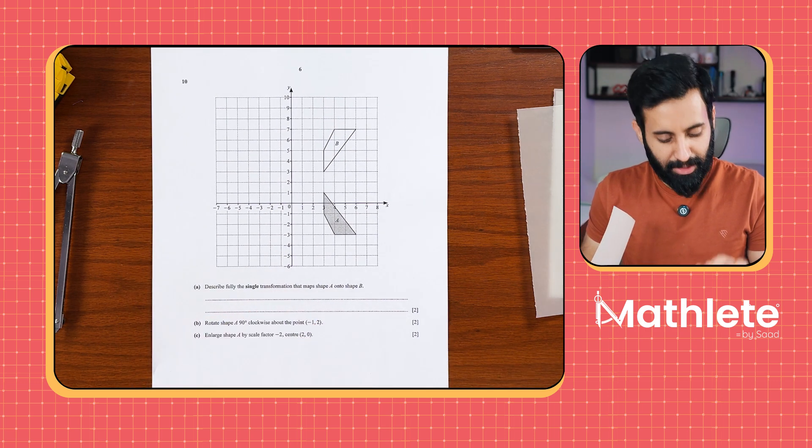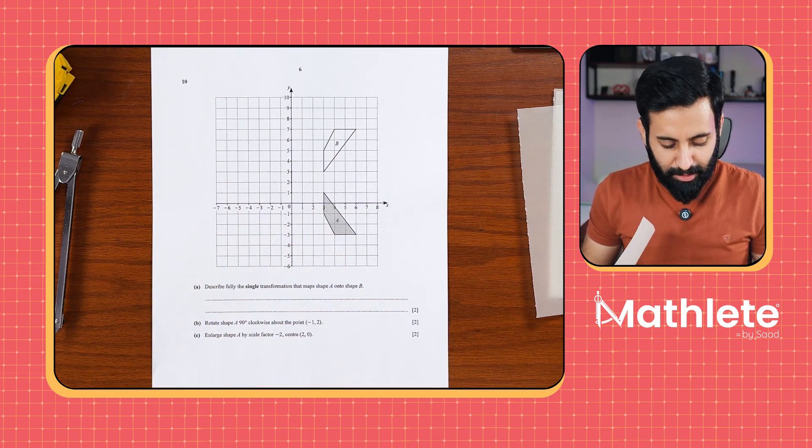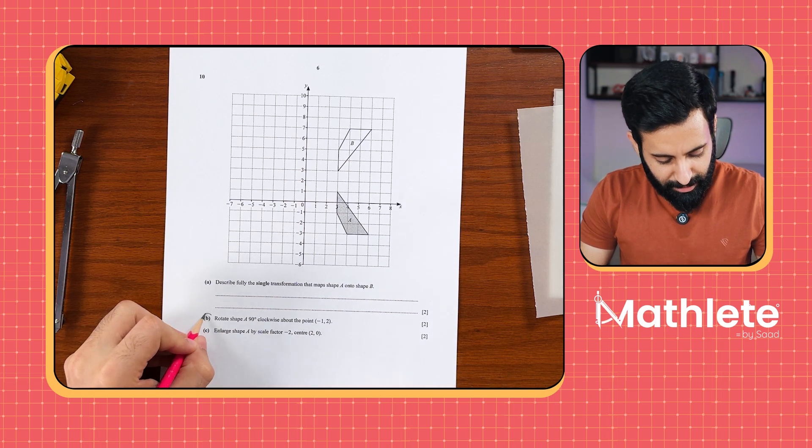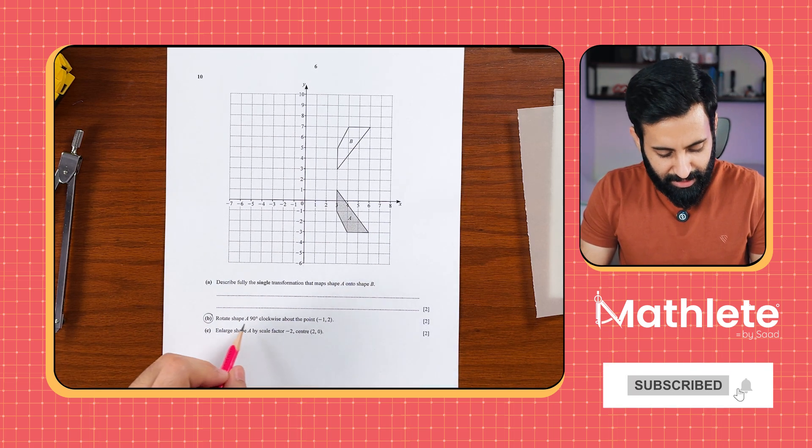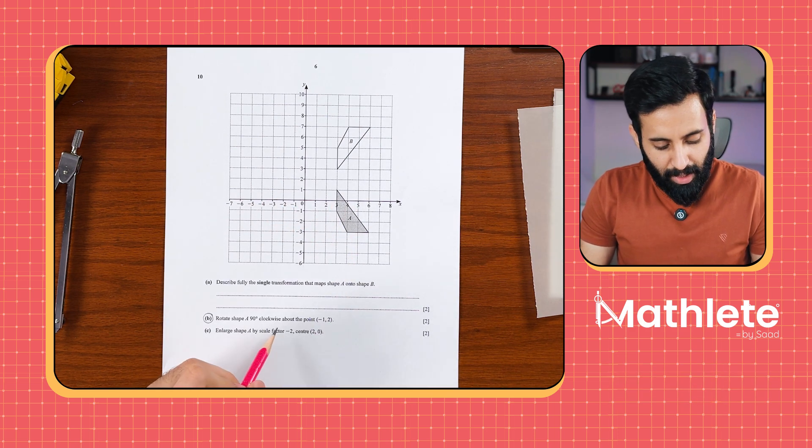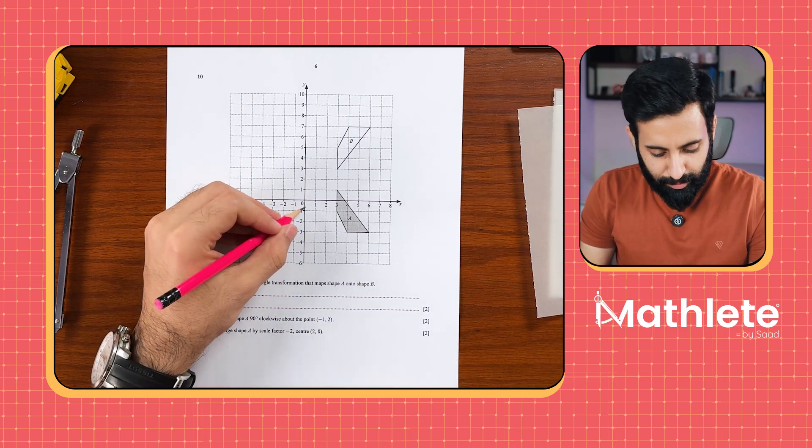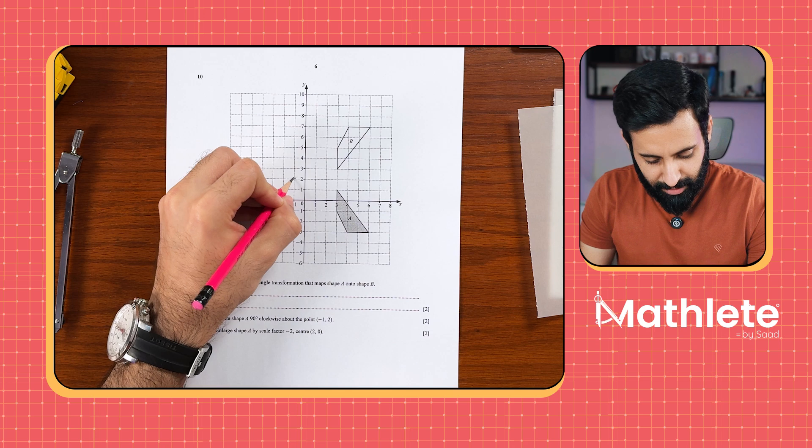So here I have a possible question and we're just going to solve a couple of possible questions to see how this works. I'm going to be focusing on the part where we're supposed to rotate which is part B. It says rotate shape A 90 degrees clockwise about the point minus 1 comma 2. So minus 1 comma 2 let's put a cross there so that this is our center.